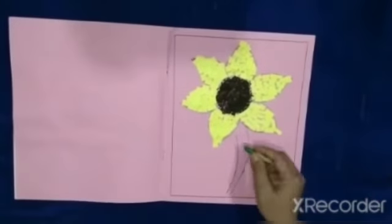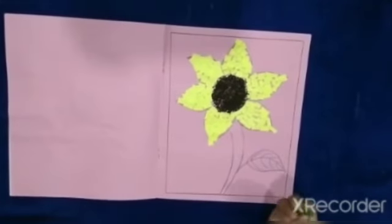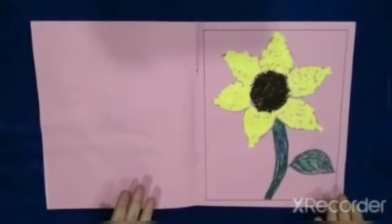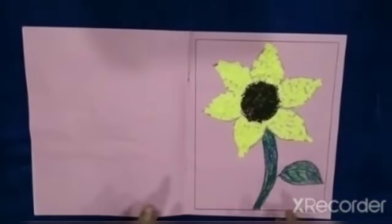Now you have to color the stem and the leaf with this green crayon. Now you can see my activity is ready. You can try it at your home. Bye bye, thank you.